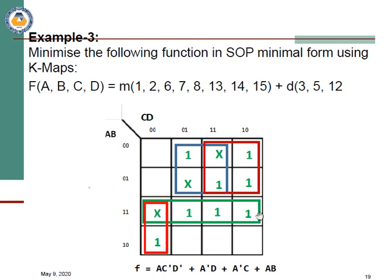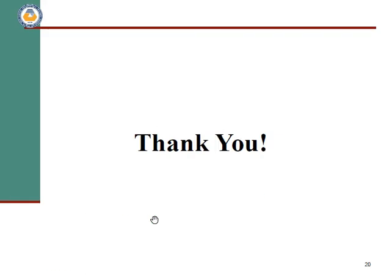Here is another example showing how questions will be given: a function is given with min terms specifying where to put ones, and don't cares specifying where to put X. Since we have min terms, we consider don't cares as one and form groups. Here we have three ones and one X. Instead of making two small groups of two, we add the don't care to form one large group of four — this is more effective grouping with fewer total groups. Remember: you considered X as one to group it, but it remains X in the map.